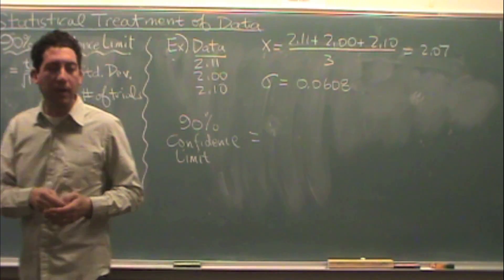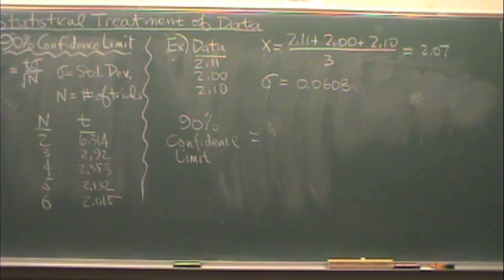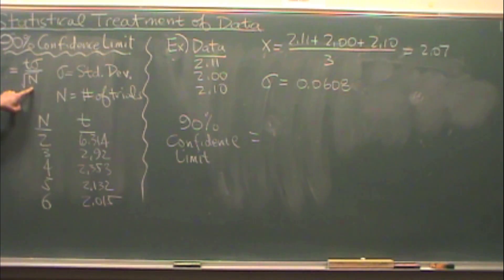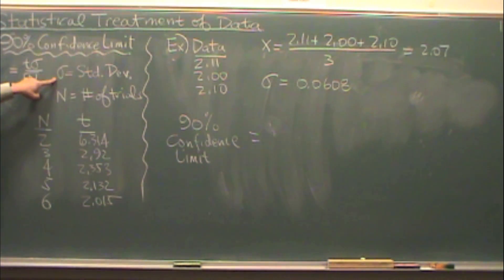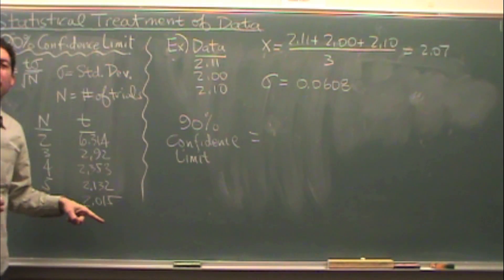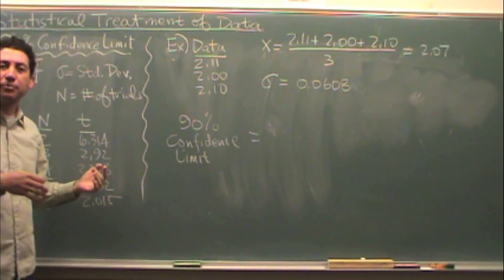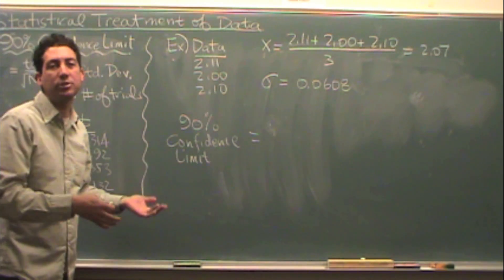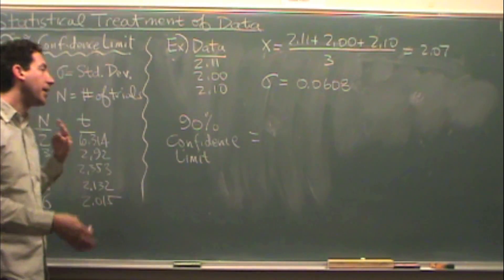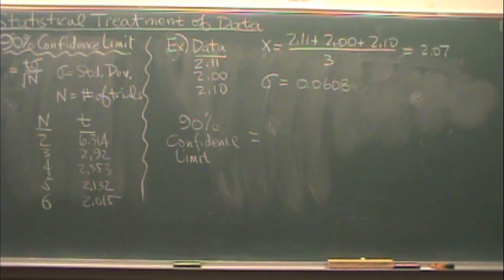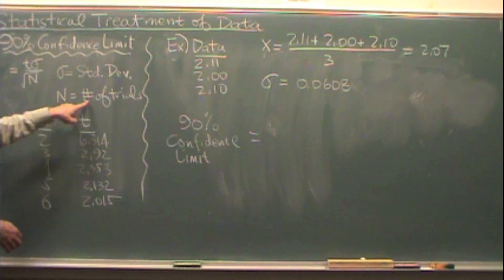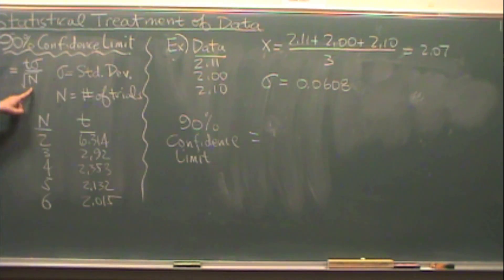Let me show you a few more details on this. Here's the formula: it's t times sigma over the square root of n. Sigma is the standard deviation — I have a previous video that shows you how to do that, so if you're not sure about the standard deviation, check out that video. n is the number of trials.